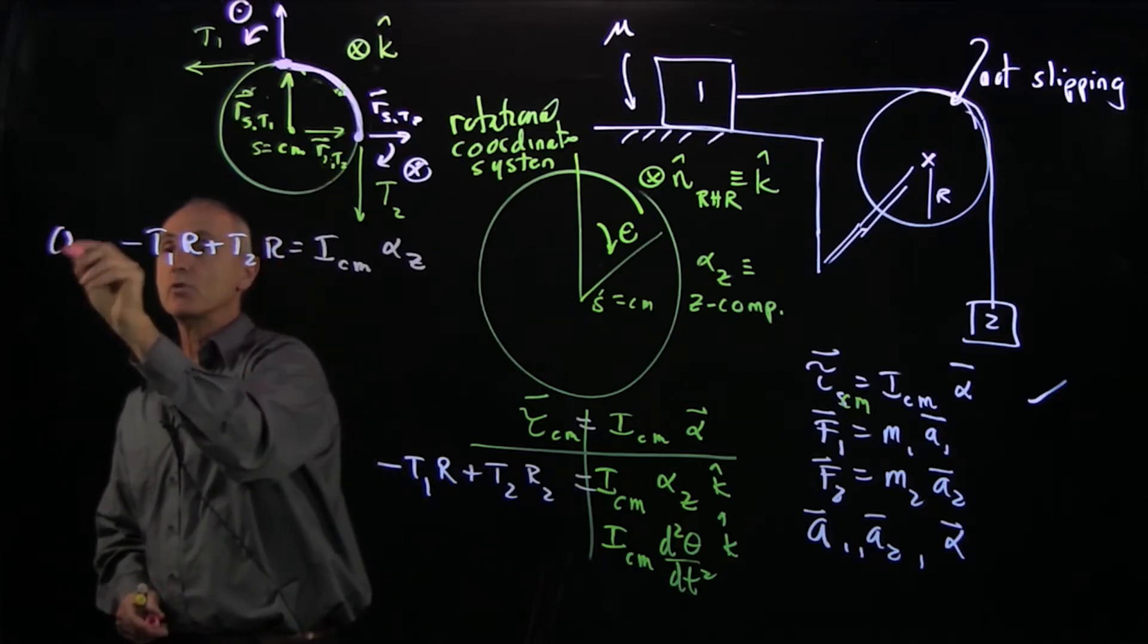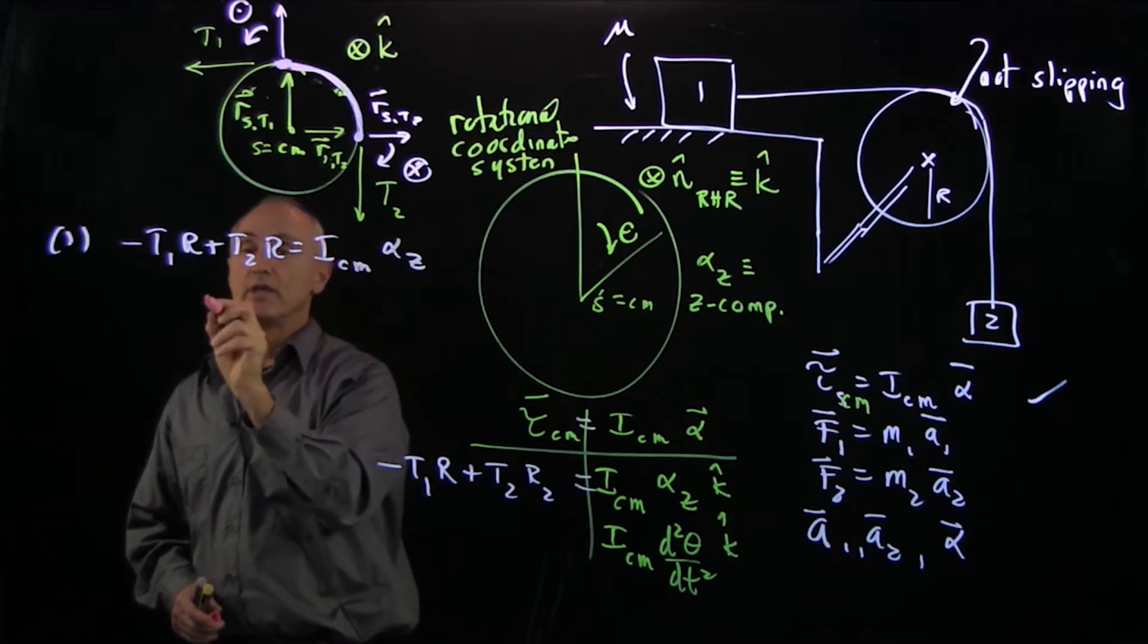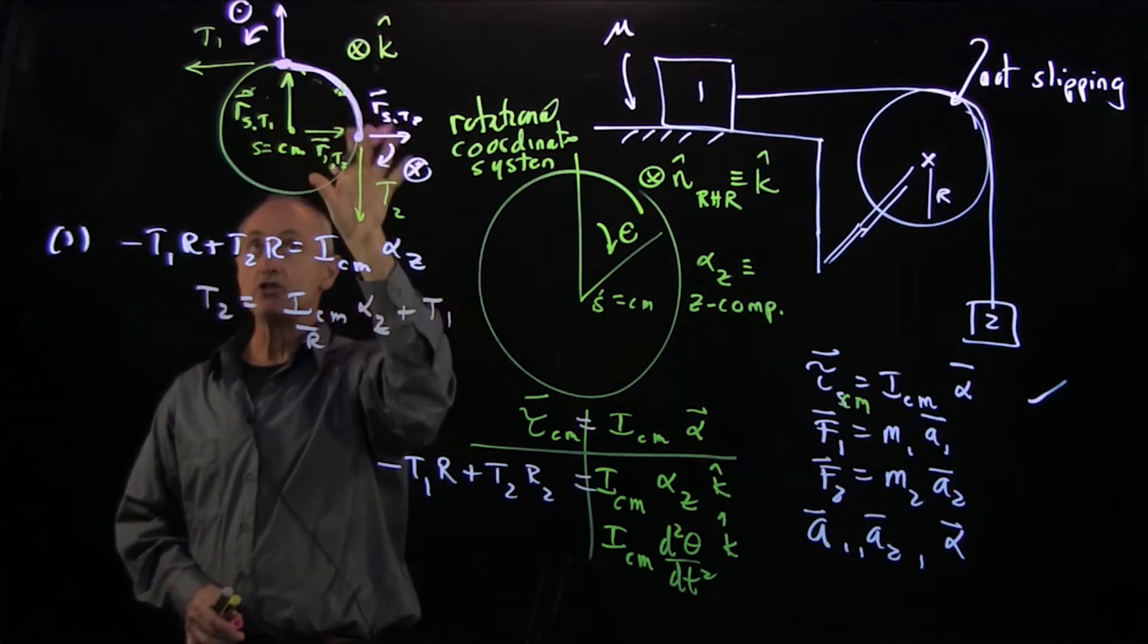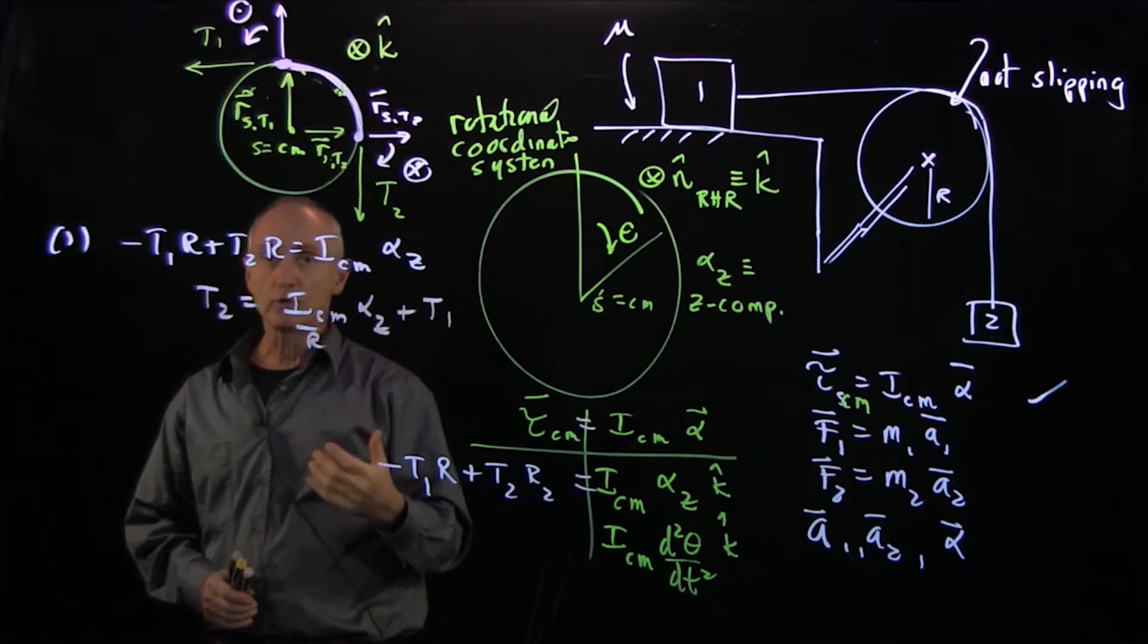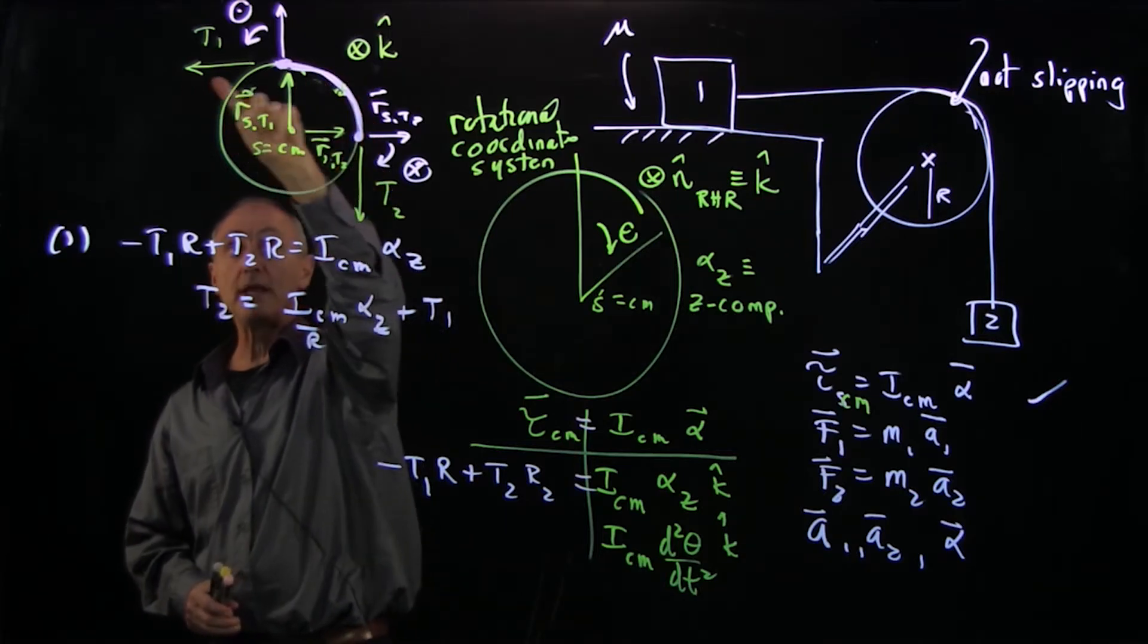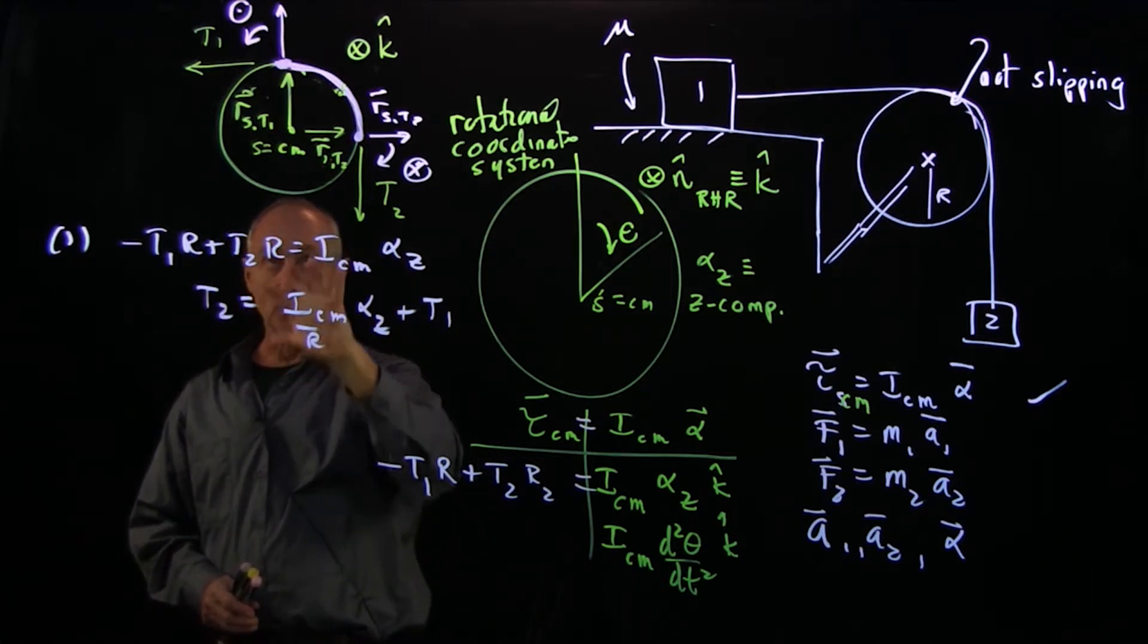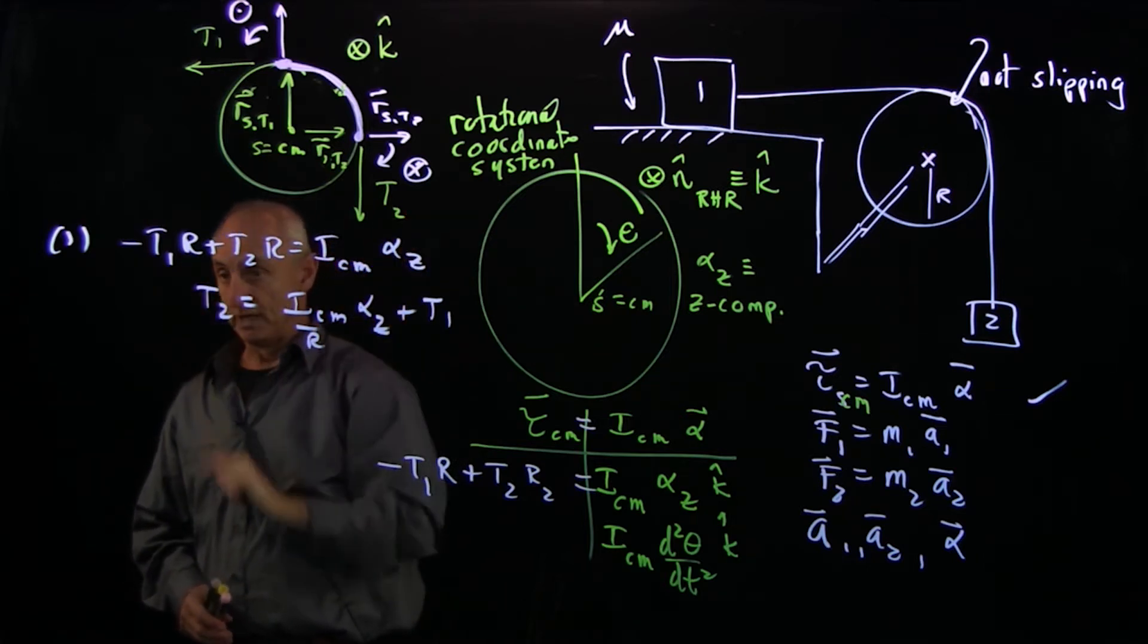This is our first equation, but it requires some thought. For the first thing, we see that the tension T2 equals ICM over R alpha Z plus T1, so the tensions on the sides are not equal. When we studied pulleys earlier in the semester, we imposed a condition that the pulley was frictionless, which meant that the rope was sliding along the pulley and there was no rotation in the pulley, so there was no contribution to alpha. In that case, T2 would be equal to T1.